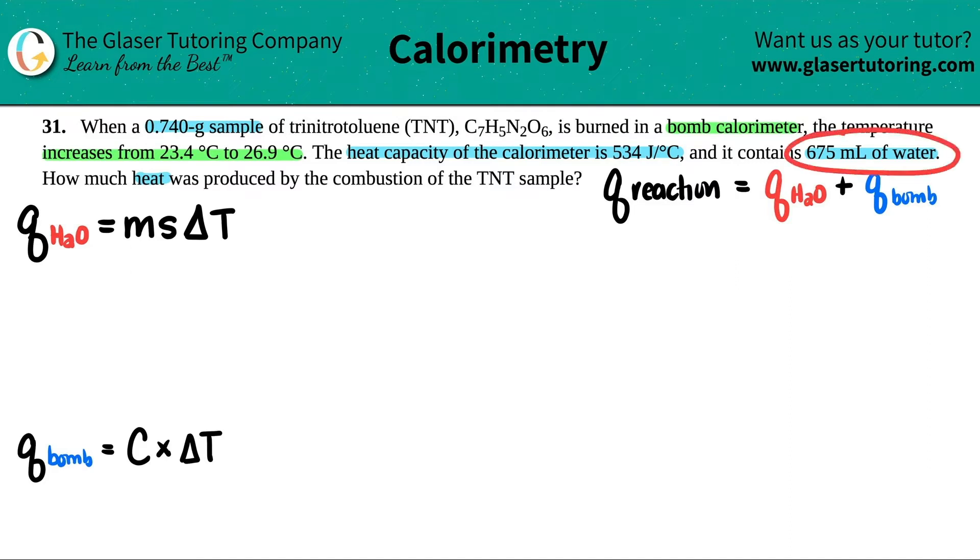Now they told me that the water was 675 mils. And remember the density of water is one gram per milliliter. So whatever the milliliters are, that's how many grams you have. So I really have 675 grams of water. Water is the only compound that we need to memorize the specific heat for.